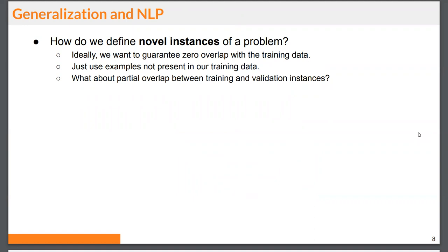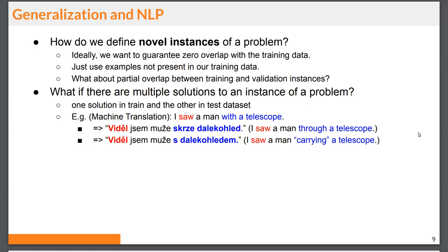For classification tasks, novel examples are just new instances not present in training data, but when working with language this can be a fuzzy definition. For example, with the sentence 'I saw a man with a telescope,' there are multiple valid translations based on context, and it can be difficult even for a human to evaluate whether the model translated it correctly. A translation might be correct but not necessarily demonstrate generalization if it is similar to one present in the training data.